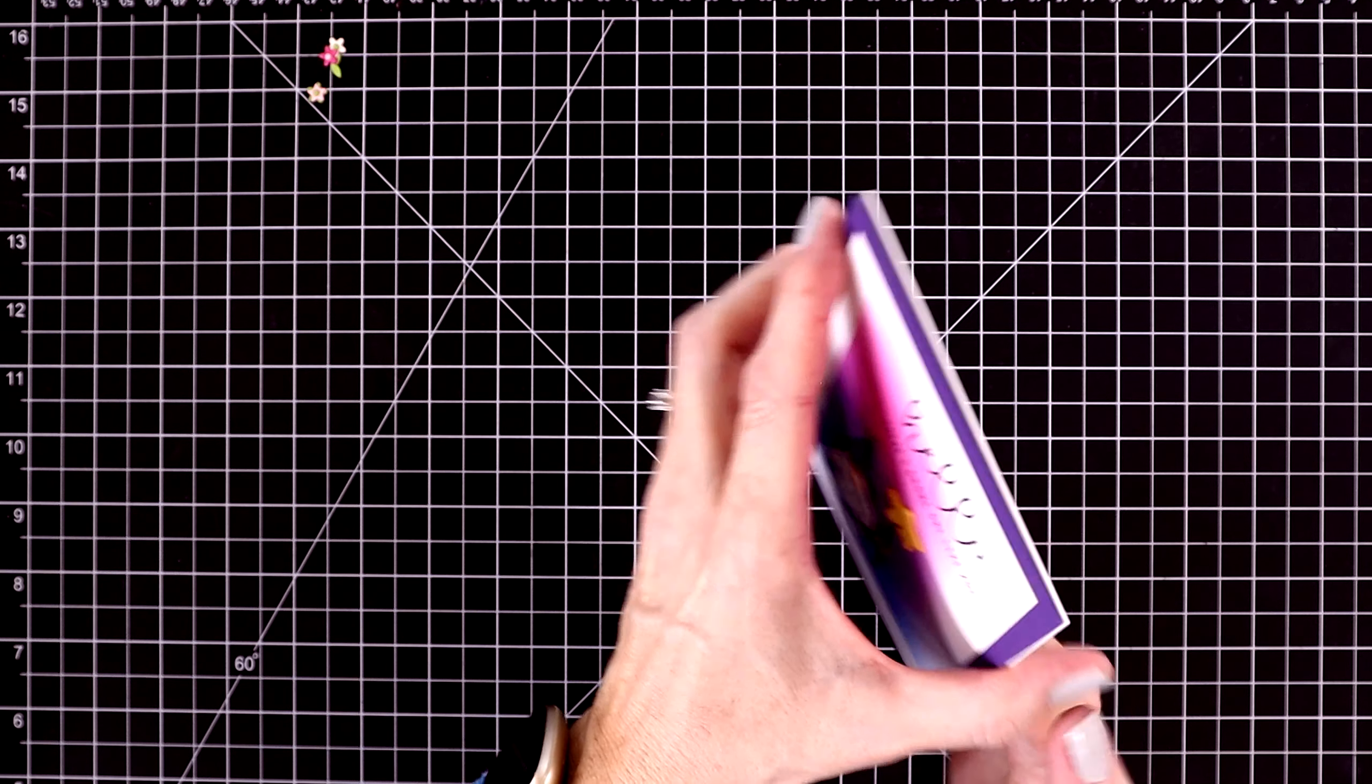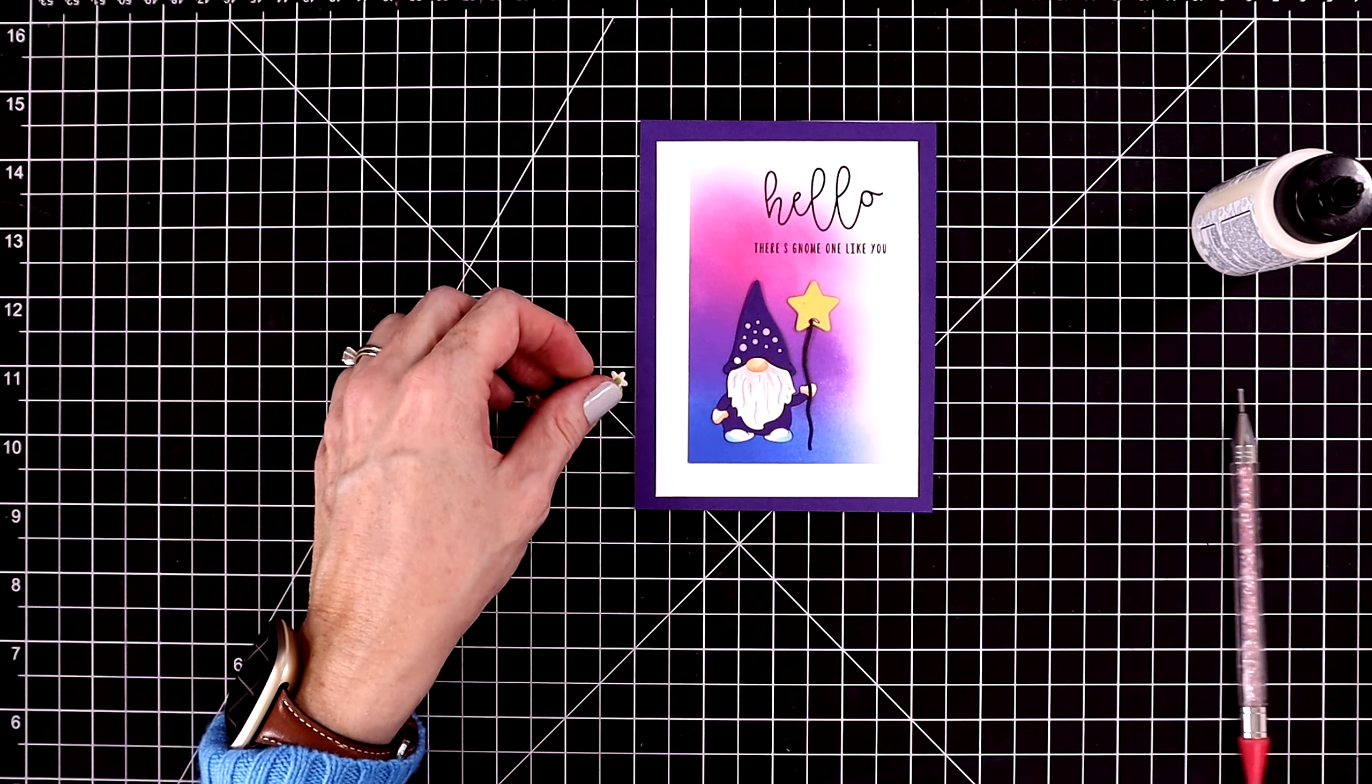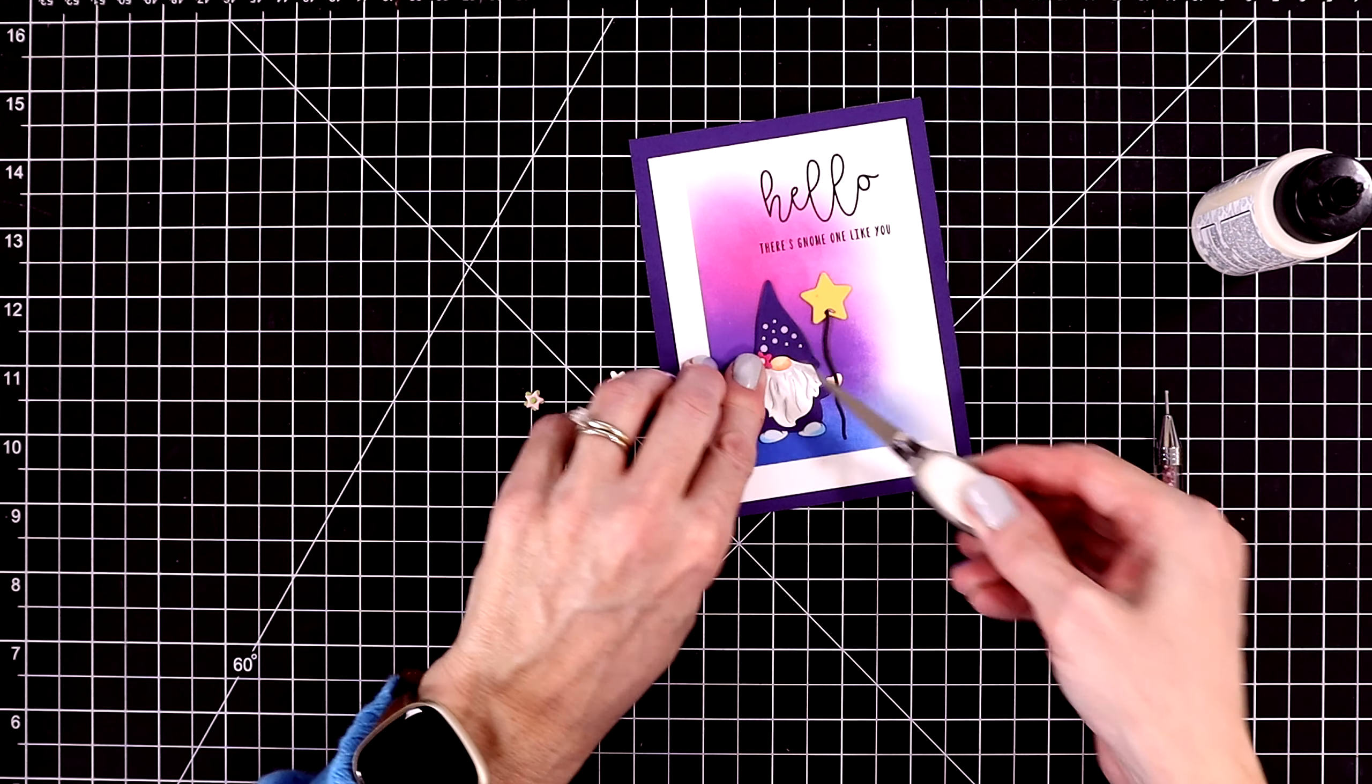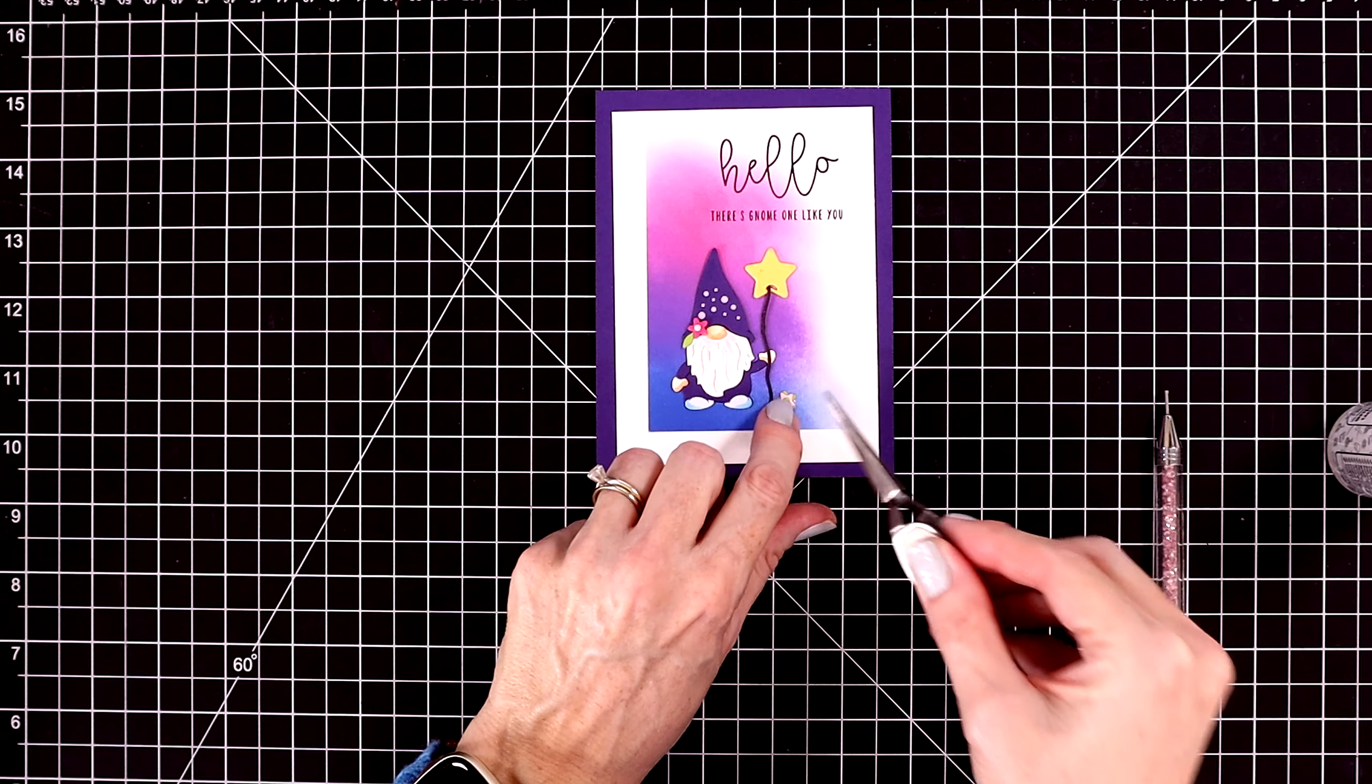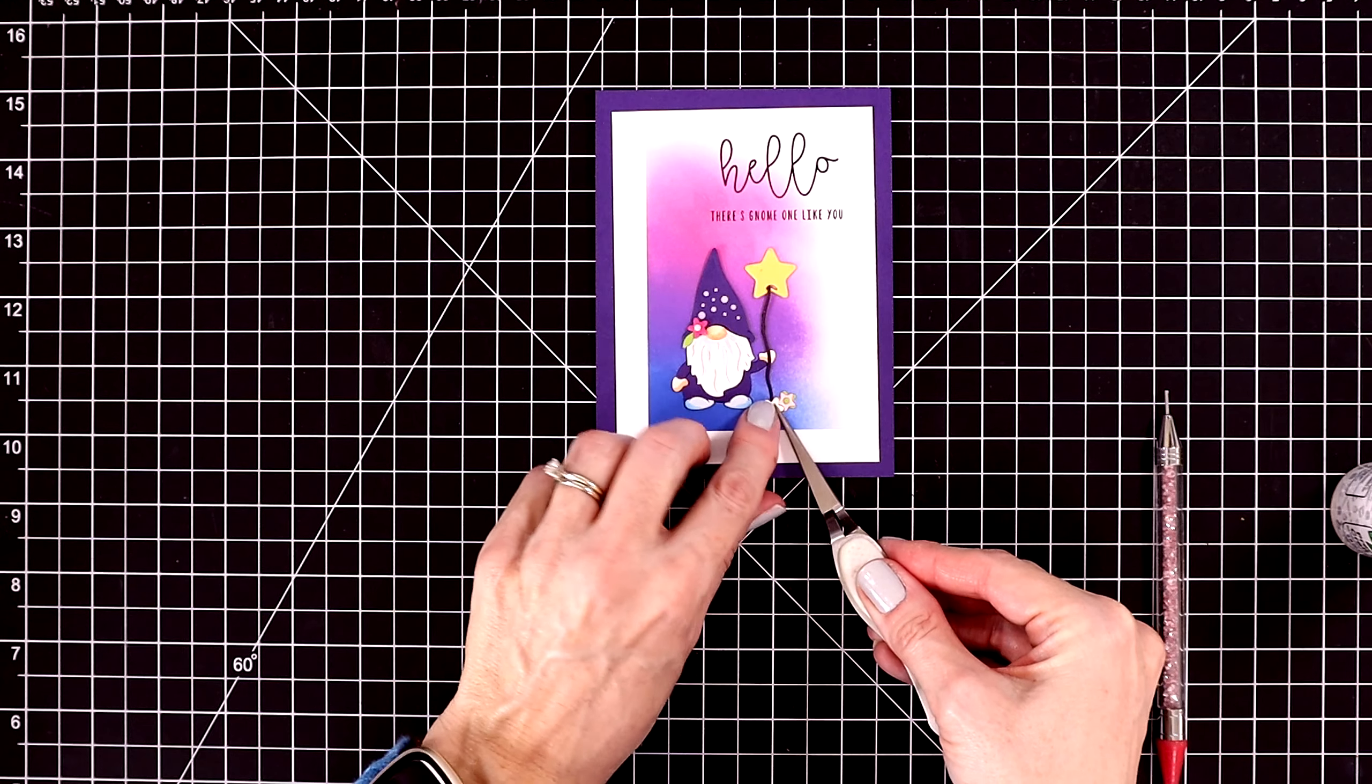I'll glue this onto a white card base, and then I'm going to add a few magical touches to this card. I'll add a few of the teeny tiny flowers that came in this little die set. I'm just using my tweezers to help me pick up these small flowers. I'll put one on his hat and two on the ground beneath his staff. This will help ground him a little bit.